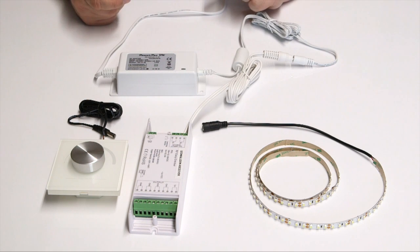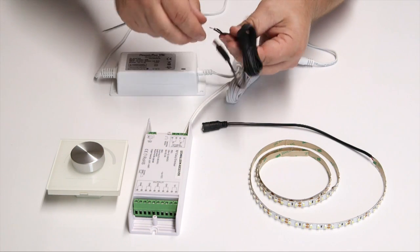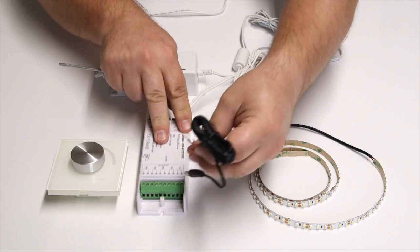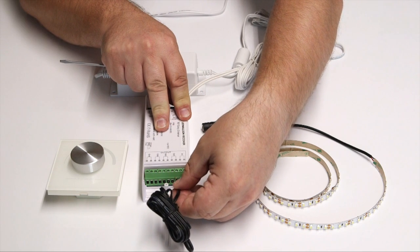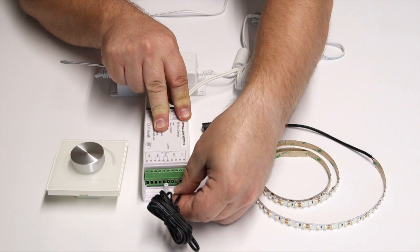Then connect your LED strip into the receiver unit using the C4229MATE cable for an easy connection. Make sure the plus and minus wires are the correct way round.